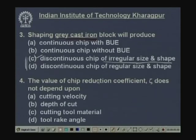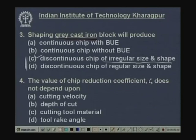Quiz question 4: The chip reduction coefficient zeta does not depend upon — cutting velocity, depth of cut, cutting tool material, or tool rake angle? Cutting velocity has minimal effect; cutting tool material affects BUE and thus zeta; rake angle most strongly affects zeta. The answer is depth of cut — it does not significantly affect zeta.